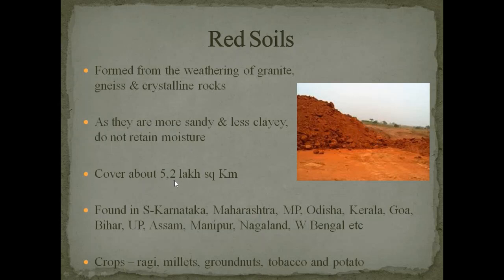Red soil covers about 5.2 lakh square kilometres. It is found in southern Karnataka, Maharashtra, Madhya Pradesh, Odisha, Kerala, Goa, Bihar, Uttar Pradesh, Assam, Manipur, Nagaland, West Bengal, etc. The soil is red in colour because of ferrous oxide.